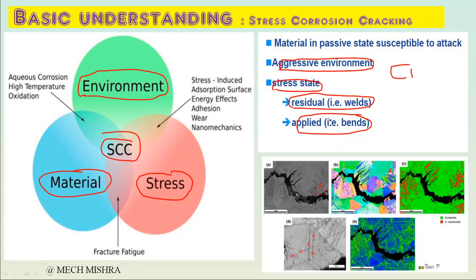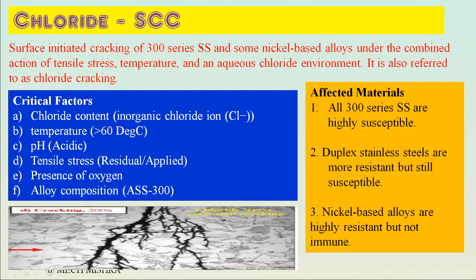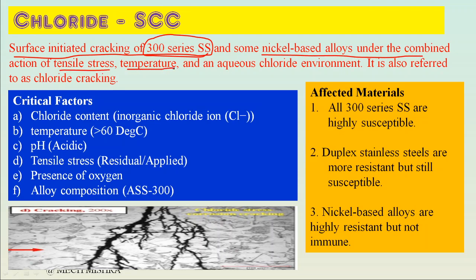Basically, how does CLSCC look? It's branched cracking and may be intergranular or transgranular. The basic definition: chloride stress corrosion cracking refers to surface-initiated cracking of 300 series austenitic stainless steel and some nickel-based alloys under the combined action of tensile stress, temperature effect, and aqueous chloride environment. It is also referred to as chloride cracking.